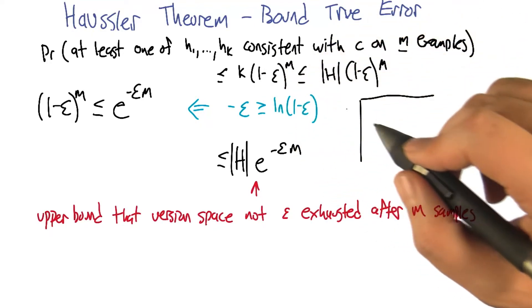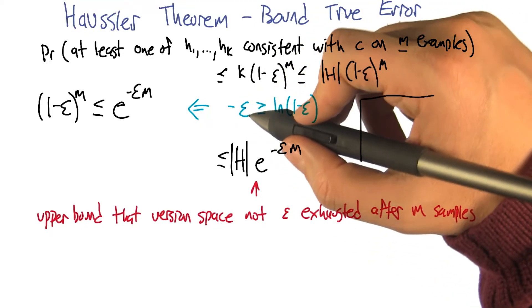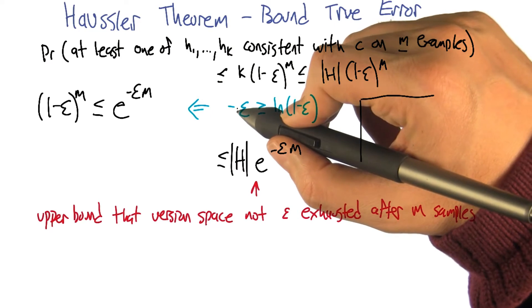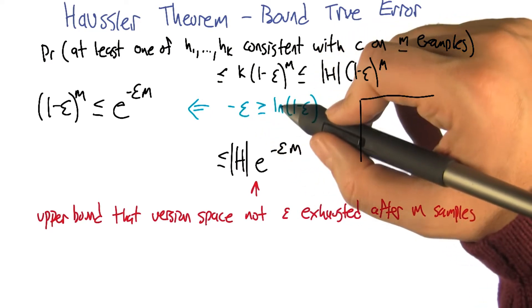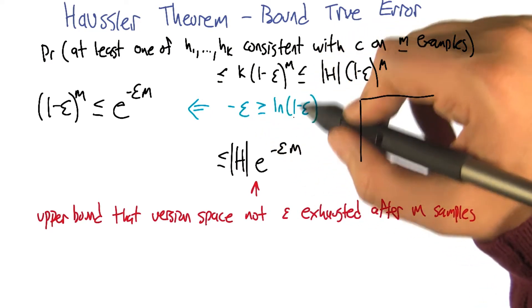All right, so it turns out that there's going to be a useful step here, which is we're going to take advantage of the fact that minus epsilon is greater than or equal to the natural log of 1 minus epsilon.